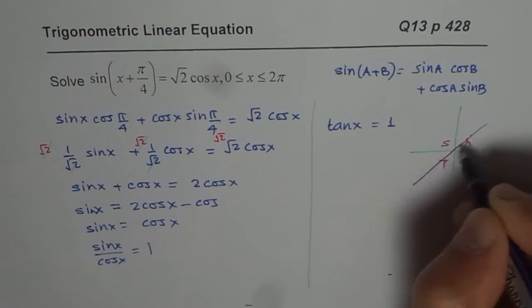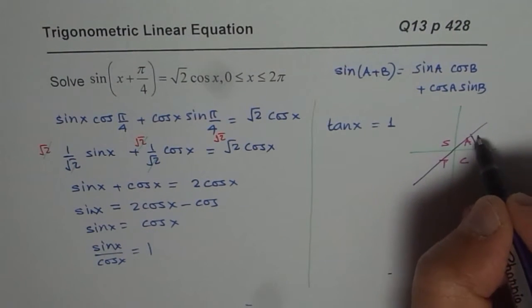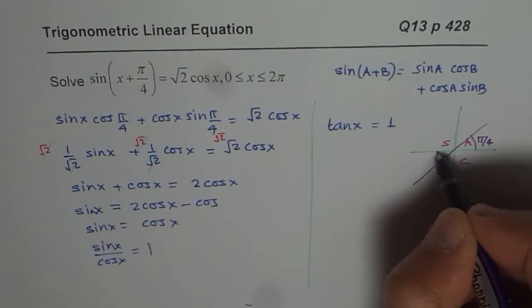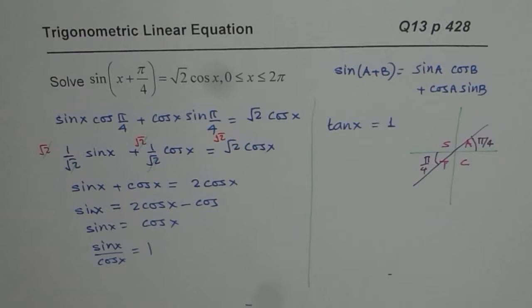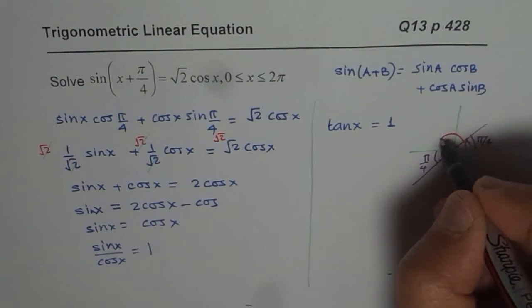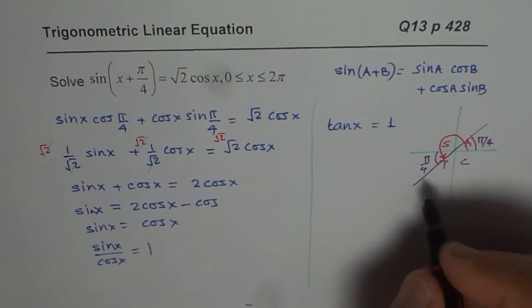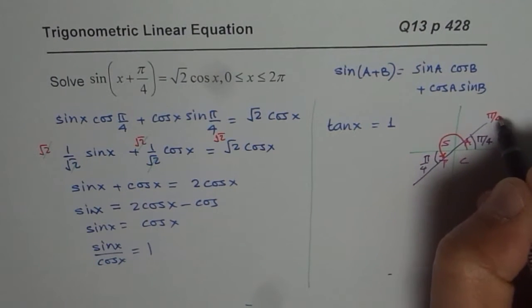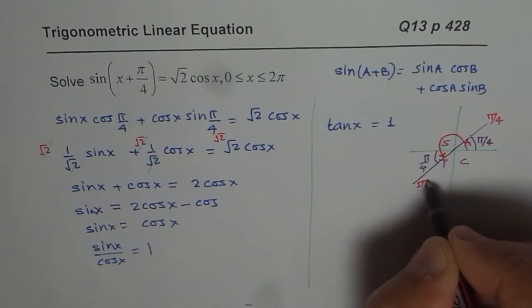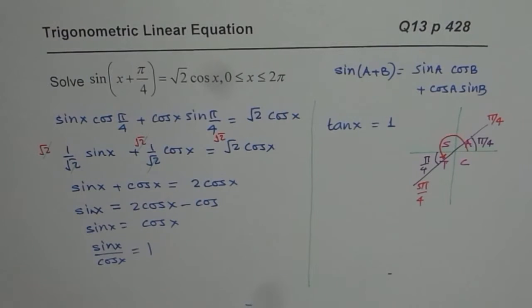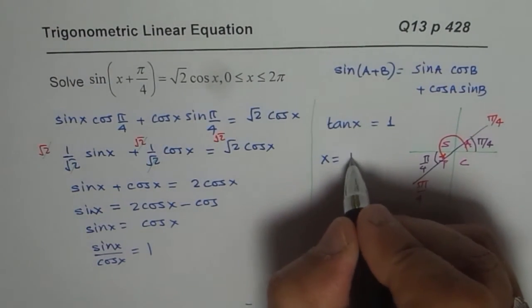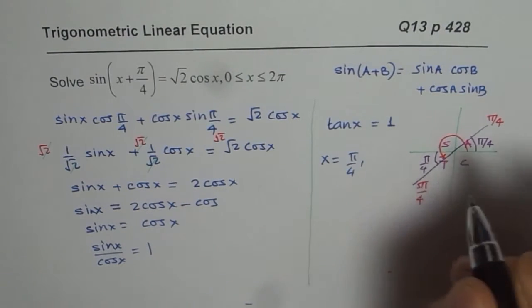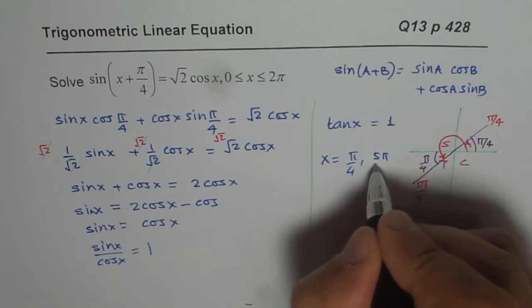One solution is tan = 1 for π/4. The other has reference angle π/4, but the principal angle we are interested in is 5π/4. So π/4 and 5π/4 are our solutions. Therefore, x = π/4 and 5π/4.